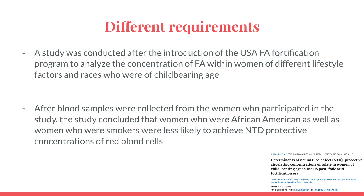Another study was conducted after the introduction of the USA folic acid fortification program to analyze the concentration of folic acid within women of different lifestyle factors and races who were of child-bearing age. After blood samples were collected from the women who participated in the study, it concluded that women who were African-American, as well as women who were smokers, were less likely to achieve the neural tube defects' protective concentration of red blood cells.